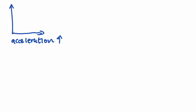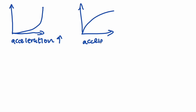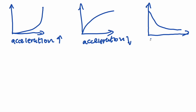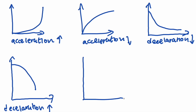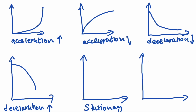And for the speed-time graphs: acceleration increasing, acceleration decreasing, deceleration decreasing, deceleration increasing, when the graph is stationary, and when it is constant.